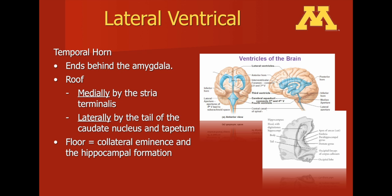When doing a temporal lobectomy, a typical approach is through the middle gyrus of the temporal lobe, and one identifies the temporal horn of the lateral ventricle. At this point, one then directs their attention to removing a part of the hippocampus when performing this procedure for the treatment of epilepsy.